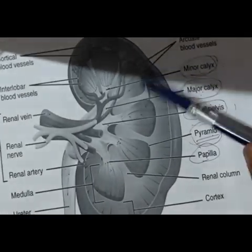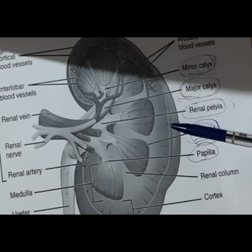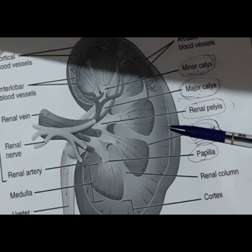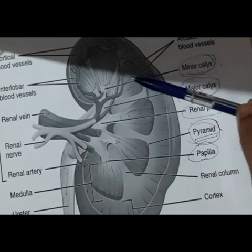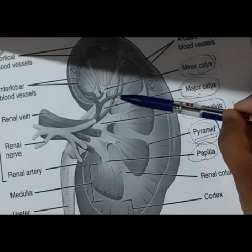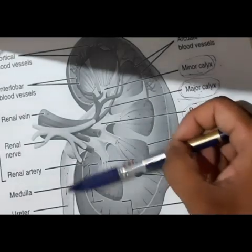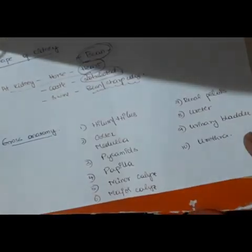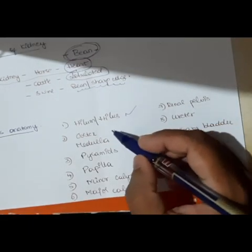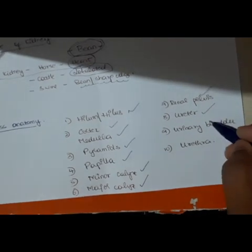To recap: the outer cortex is granulated and reddish-brown, mainly made up of glomeruli and convoluted tubules, whereas the medulla is made up of loops of Henle and cone-like structures called pyramids. The end of each pyramid is the papilla, and multiple papillae form the minor calyces, which form the major calyces, which drain to the renal pelvis, then ureter, urinary bladder, and urethra. You should now know: hilum, cortex, medulla, pyramids, papilla, minor calyx, major calyx, renal pelvis, ureter, urinary bladder, and urethra.